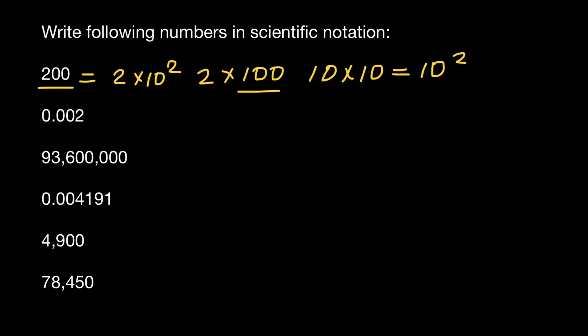How are we going to write 0.002 in scientific notation? Take a look. We move this decimal point 1, 2, 3 places to the right. And now we get 2 times 10 to the power of minus 3.